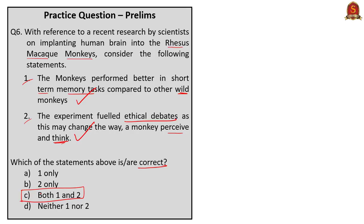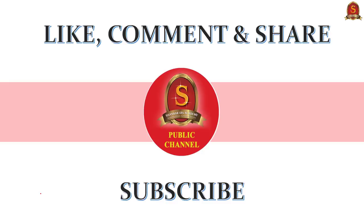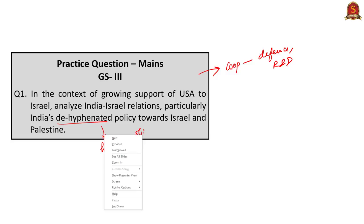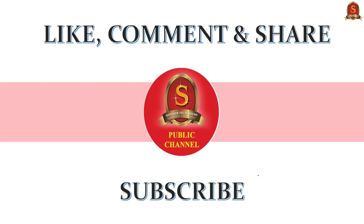Now let us see one practice question based on GS3 Main paper: In the context of growing support of USA to Israel, analyze India-Israel relations, particularly India's dehyphenated policy towards Israel and Palestine. For the answer, mention cooperation in defense, space and R&D sectors as discussed in the analysis. With respect to dehyphenation, mention growing US support which makes it a moral imperative for India to stand with Palestine — this would probably make the policy of dehyphenation hollow. With this, we come to the end of this video. If you like this video, don't forget to like, comment, share and subscribe to our Shankar IAS Academy YouTube channel. Thank you.